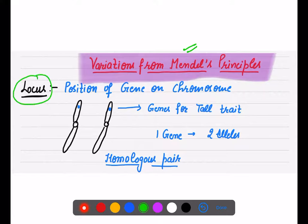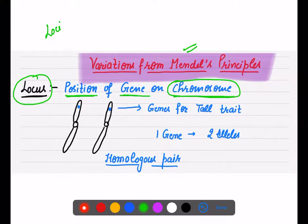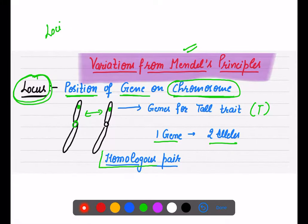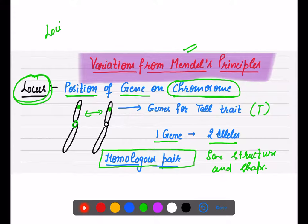Before discussing incomplete dominance and co-dominance, you need to understand the term locus. A locus (plural: loci) is the position of a gene on the chromosome. As shown in the diagram, the chromosome carries the gene for a trait like 'tall' at a specific position — that position is the locus.